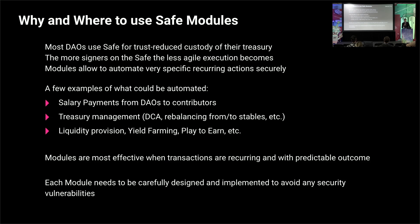Why would you use Gnosis Safe modules? Most DAOs around these days use Safe for treasury management because it's very secure, it's decentralized, and you can have multiple people have eyes on whatever is happening. But a lot of DAOs end up having very repetitive transactions — paying contributor salaries, doing treasury management, DCA, whatever. When you have recurring actions that you need to execute every month or every week, you don't want to go through the hassle of doing signatures every time. You could just write a module which automates that one very specific action.